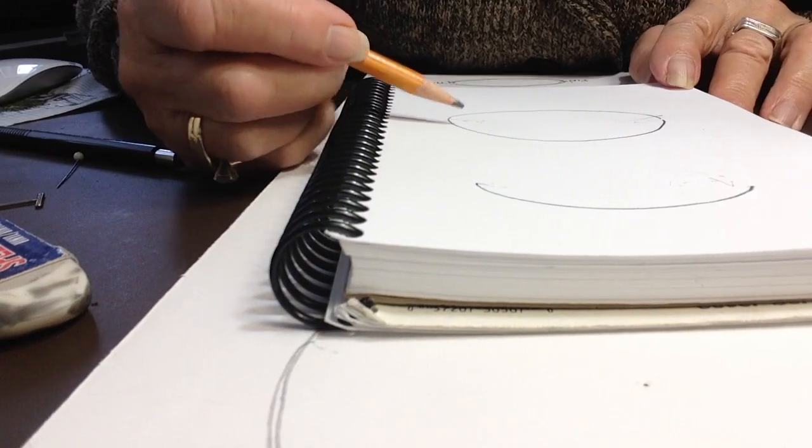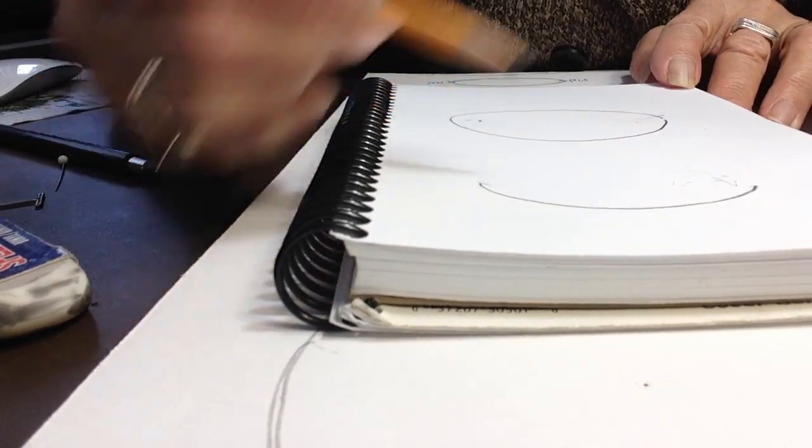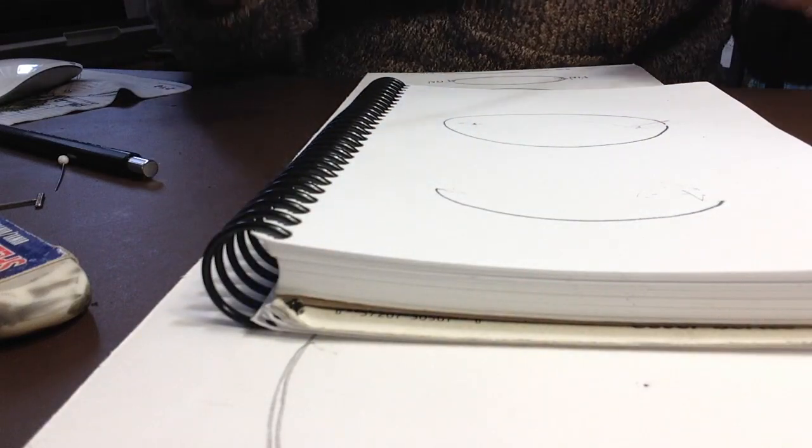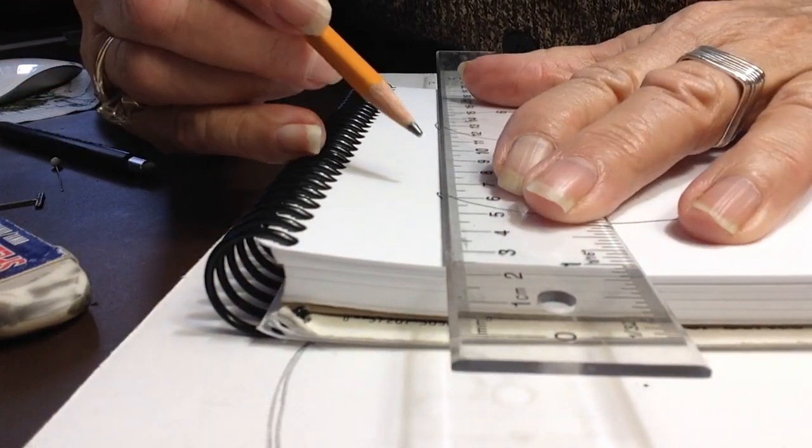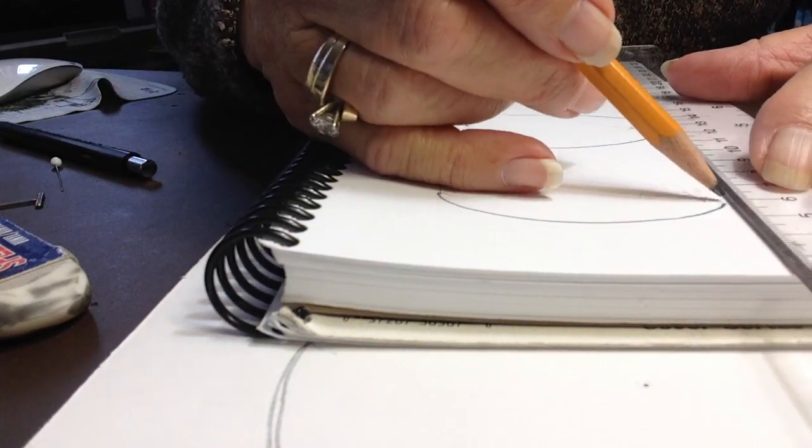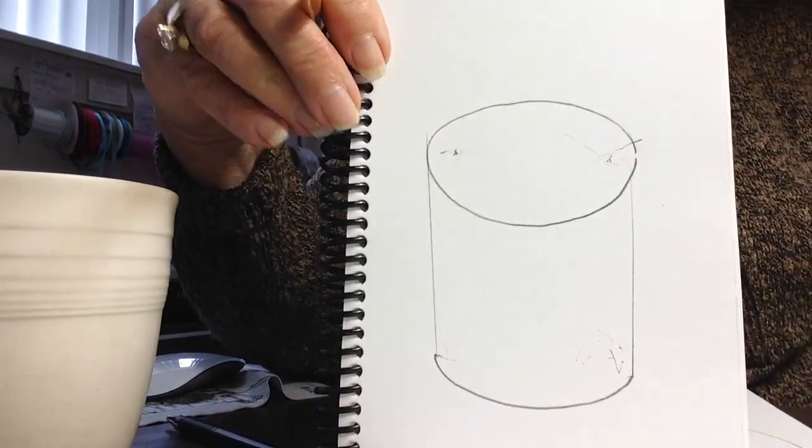Now in order to do it properly, I would take this point and measure down, and at this point measure down exactly the same distance. To join the side of the cup now, just lightly, and there you have a very nice looking cup.